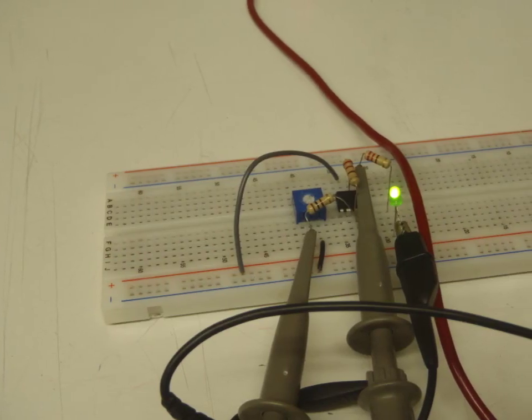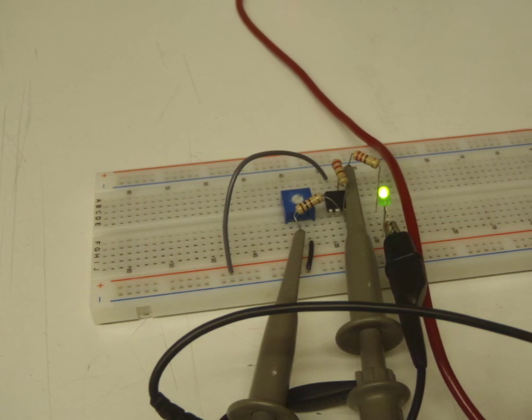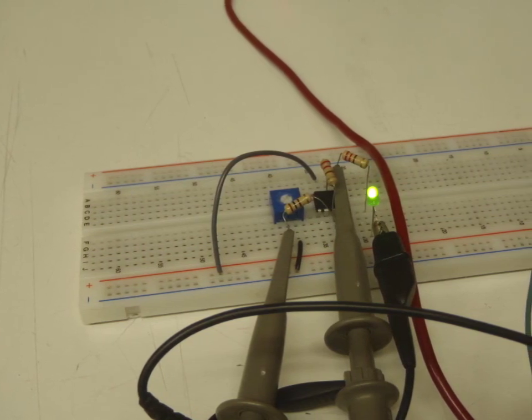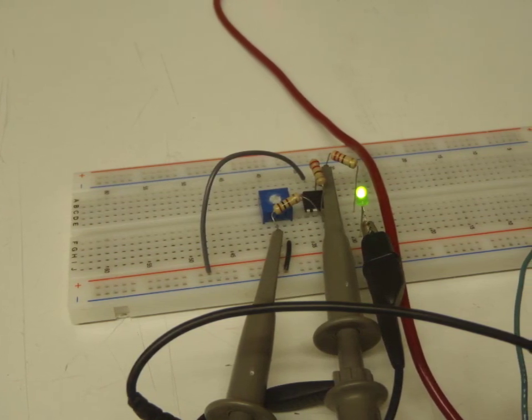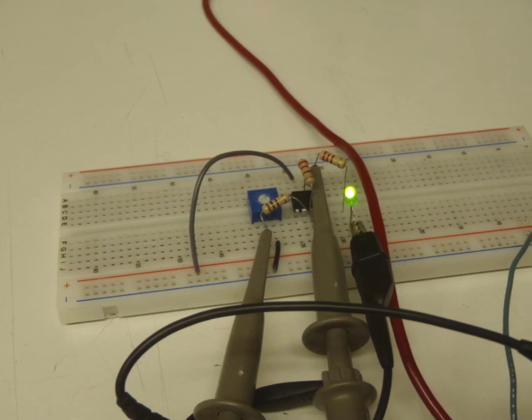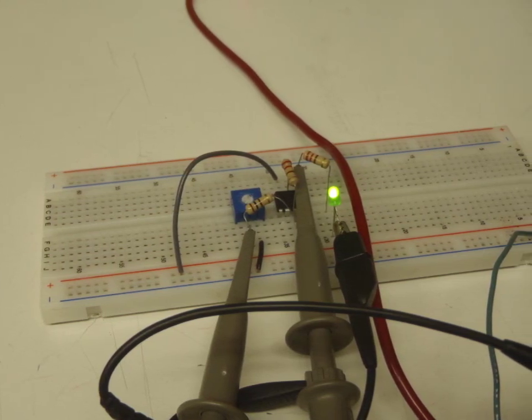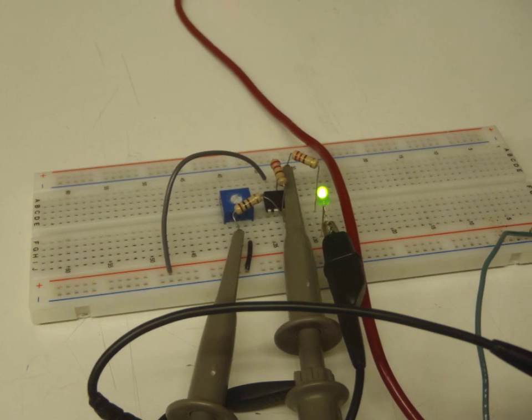As you can see now the LED is a lot brighter, which means we've supplied more of an input signal. The gain of that signal is going to amplify the actual voltage going into the LED, so we have a brighter LED.